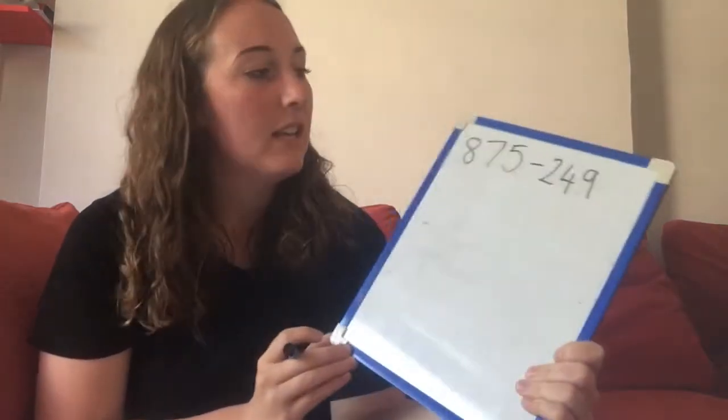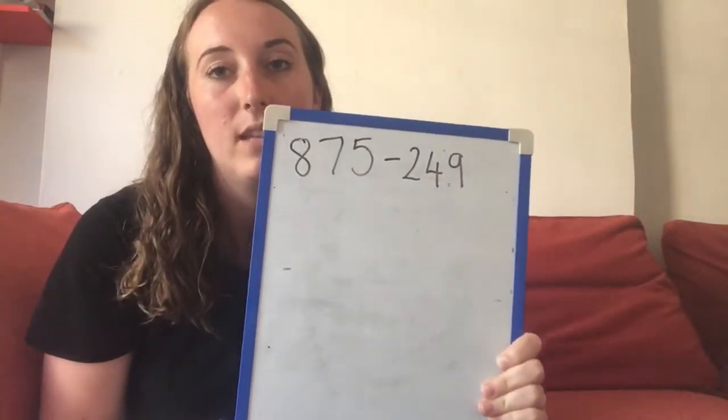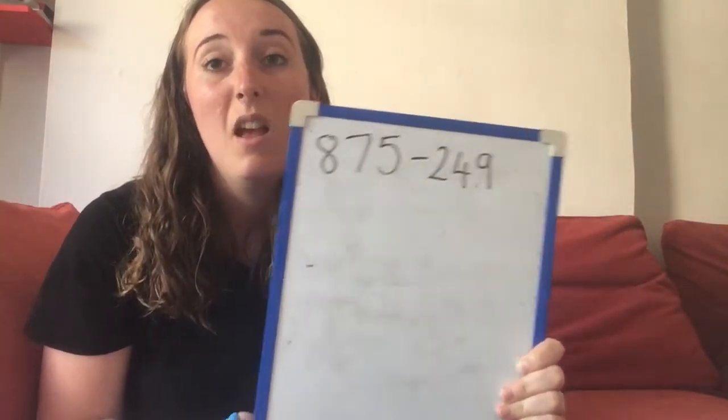Now I'm going to move on to do an example with one exchange. This one might be a little bit trickier so make sure you're watching carefully. Here's my calculation: 875 take away 249.